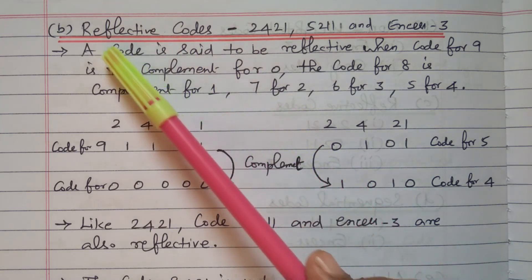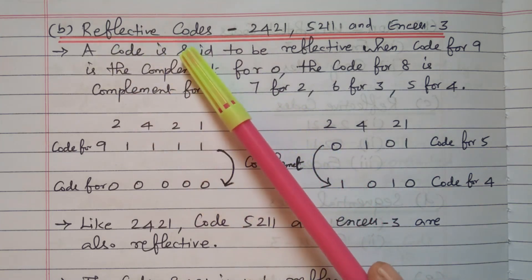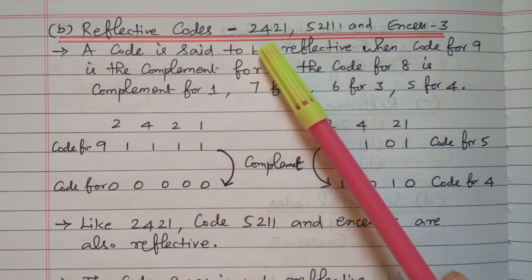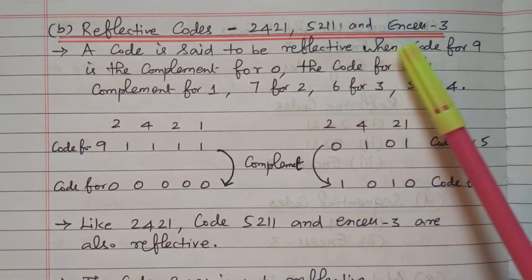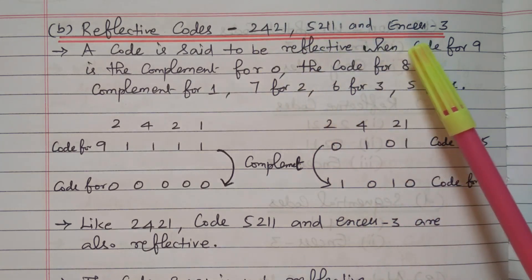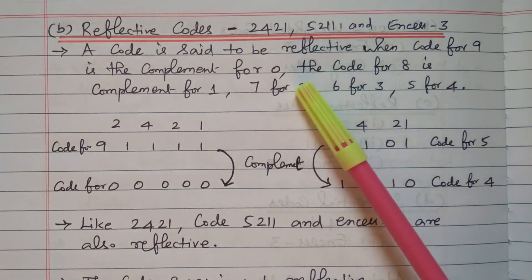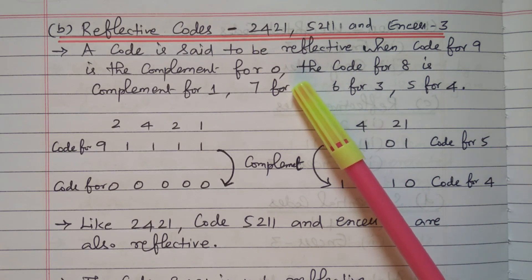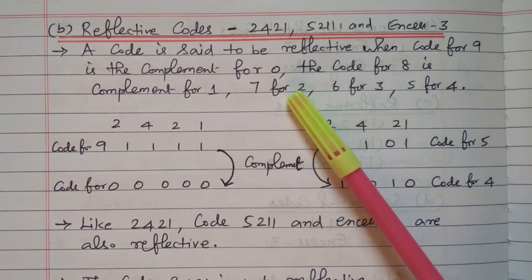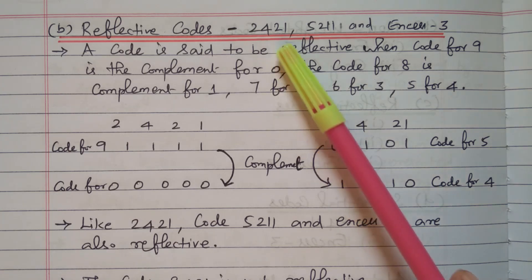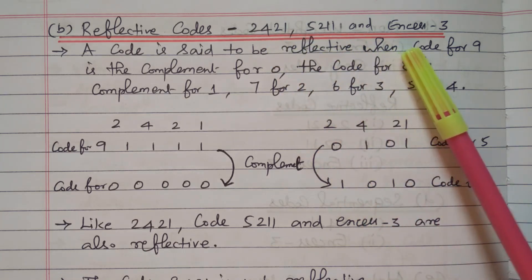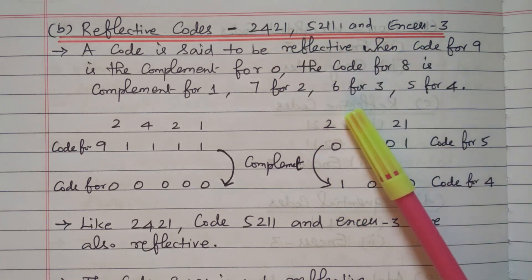Now we will go to the topic: reflective code. The 2421, 5211, and XS3 codes are known as reflective codes because the code for one is the reflection of the other. Other codes are not reflective codes. Only these three codes come under reflective codes.